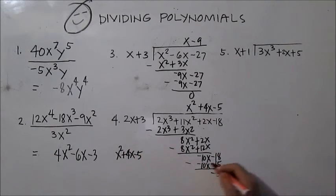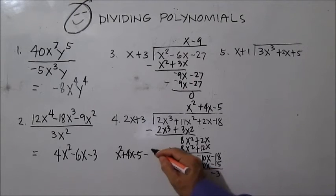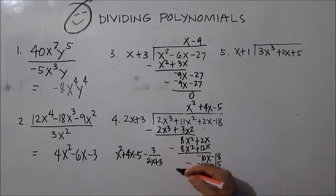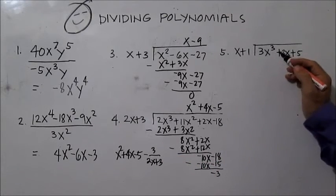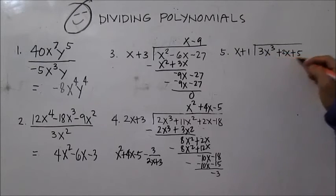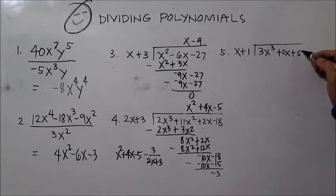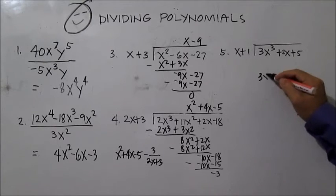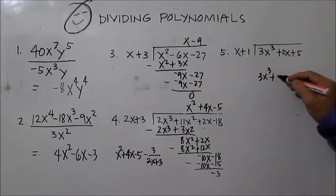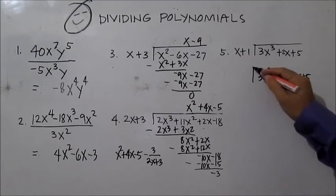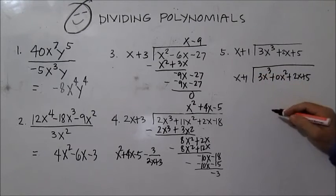For number five, you have 3x cubed plus 2x plus 5 divided by x plus 1. Take note that the x squared term is missing. It is best to supply it with 0 as the coefficient, so you have 3x cubed plus 0x squared plus 2x plus 5, divided by x plus 1.